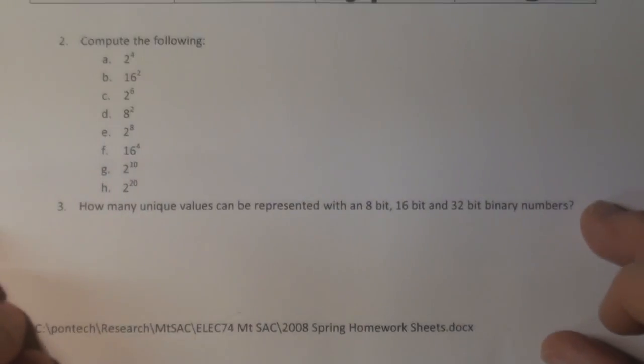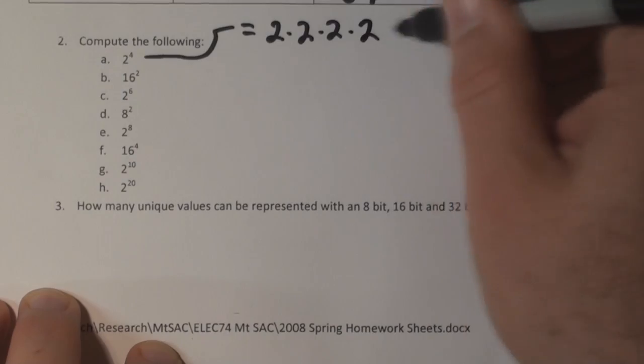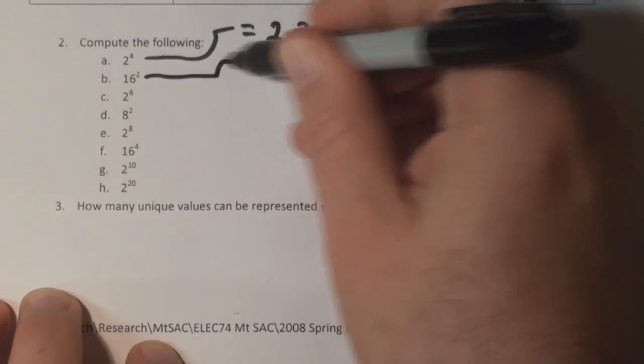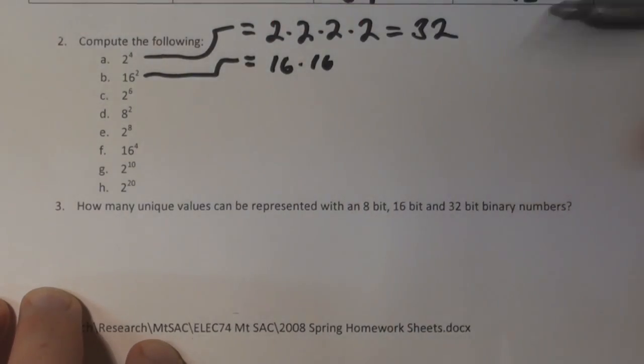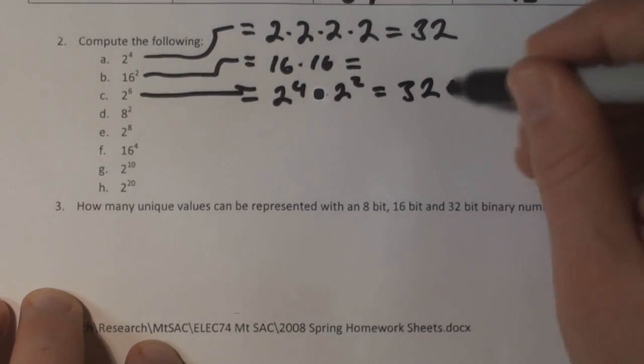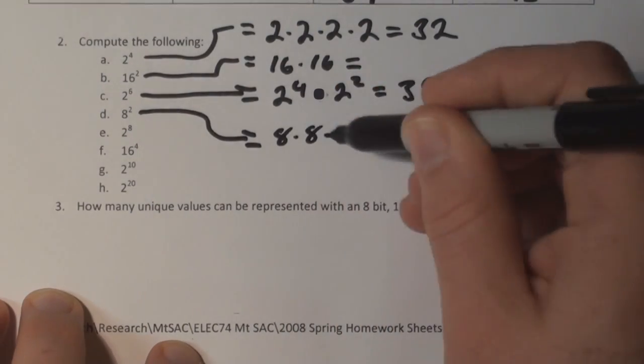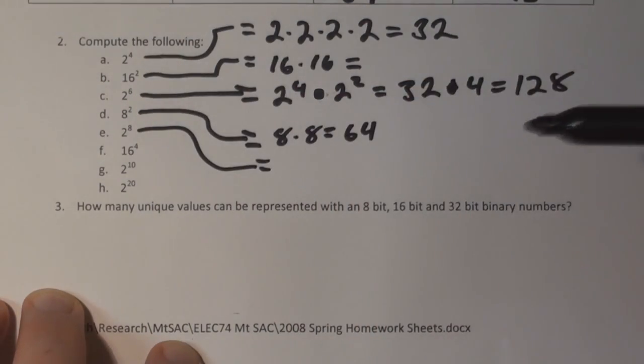Part 2 is computing the exponents. 2 to the 4th is 2 times 2 times 2 times 2. 16 to the 2nd is 16 times 16. 2 to the 6th is 2 to the 4th times 2 to the 2nd. 8 to the 2nd is 8 times 8. 2 to the 8th is 256.